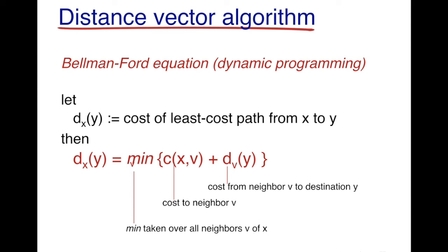What the Bellman-Ford equation does is the following: it tries to find out the direct cost of reaching from x to any neighbor v, which is denoted by cxv. dvy is the cost of the least cost path from that neighbor v to y. To determine the least cost path from x to y, we take the minimum over all neighbors of x, and hence we are able to determine dxy.